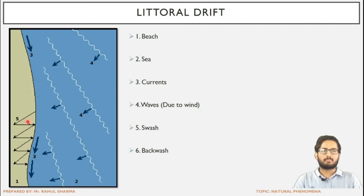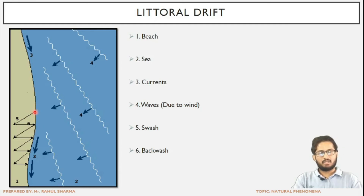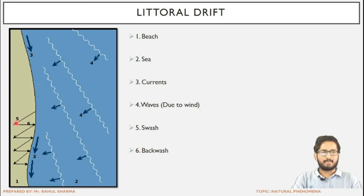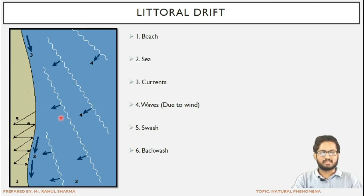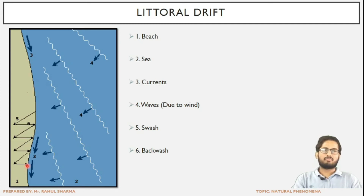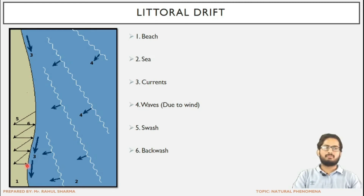The backwash line — when water moves back towards the water body — is perpendicular because the gravitational force acting on it is always perpendicular. So at the microscopic level: a sediment at one position moves towards the coast due to the inclined swash movement, then due to gravitational backwash it moves back to an adjacent position. This continuous movement — water rushing toward the coast then receding — causes the sediment to migrate from one point to another over time.